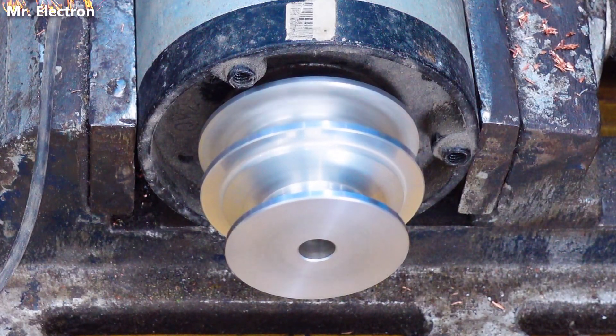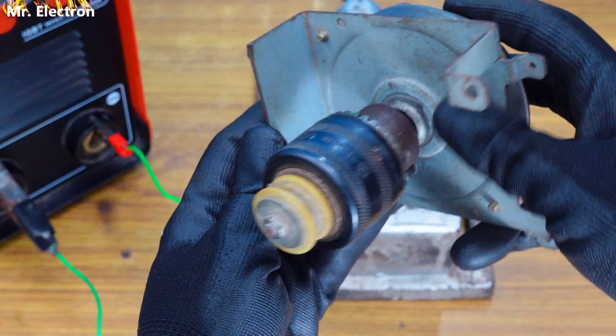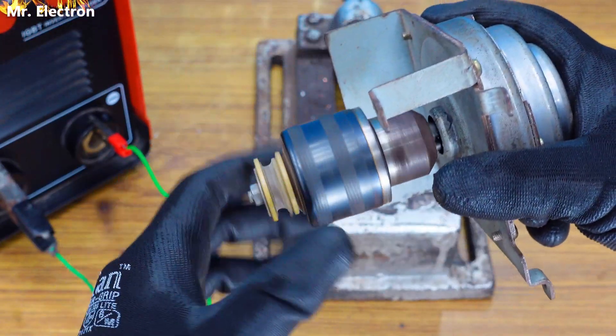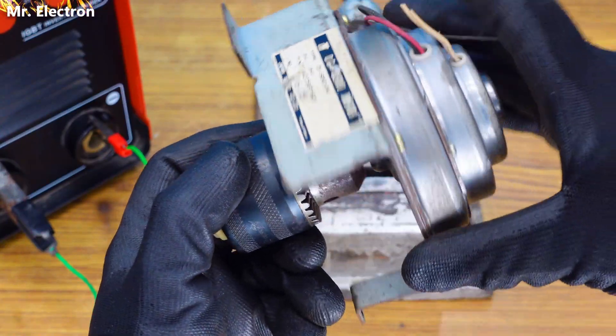Now this is a 24 volts motor, high RPM, and to the shaft of it I have connected this drill chuck, a pretty big drill chuck.